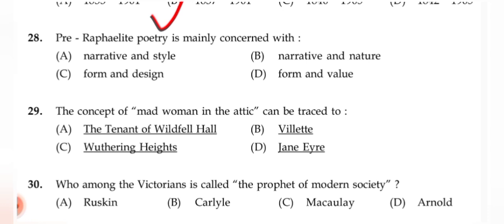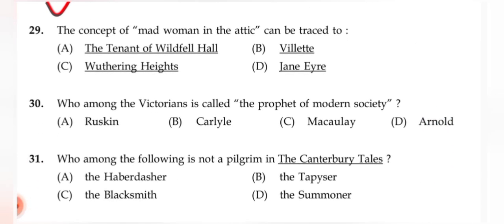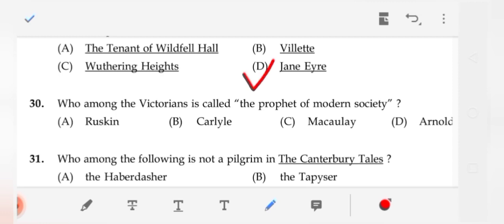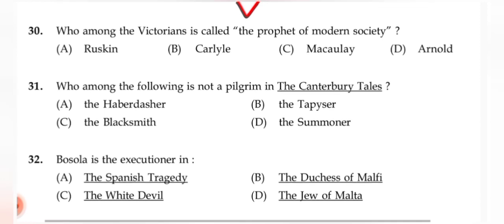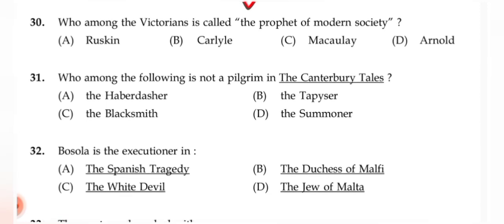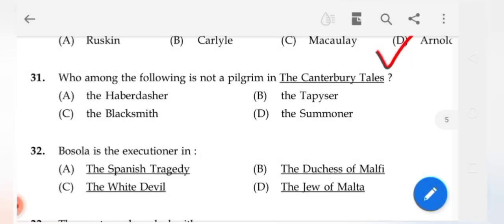Question 26: The correct sequence is (A): 'Vanity Fair,' 'Henry Esmond,' 'Middlemarch,' 'The Return of the Native.' Question 27: Queen Victoria's reign spans (B) 1837 to 1901. Question 28: Pre-Raphaelite poetry is mainly concerned with (C) form and design. Question 29: The concept of the 'madwoman in the attic' can be traced to (D) Jane Eyre. Question 30: Who among the Victorians is called the prophet of modern society? The correct answer is (D) Matthew Arnold.